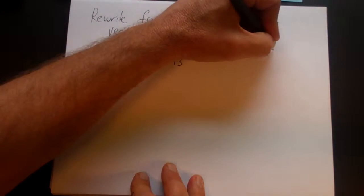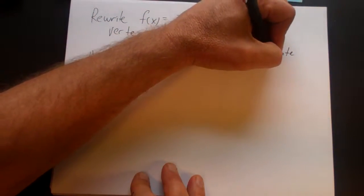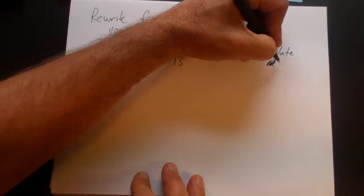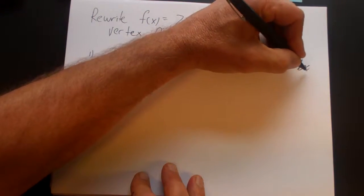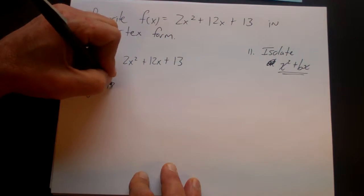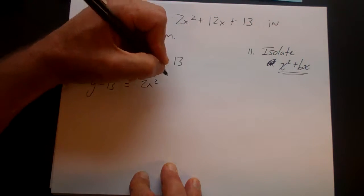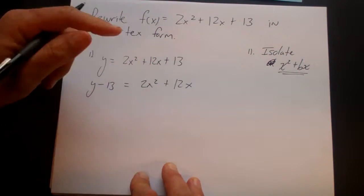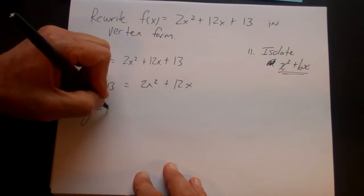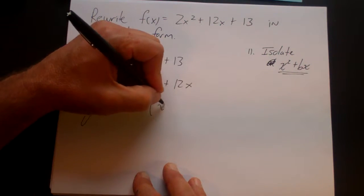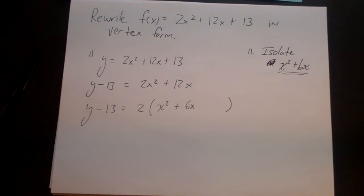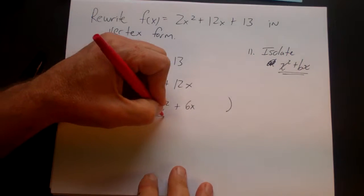So the first thing that you do is you want to write out the equation y equals 2x squared plus 12x plus 13. And the first step is you want to isolate x squared plus bx. And the way we're going to do that is first we're going to move the 13 over the other side, so y minus 13 equals 2x squared plus 12x. And then I'm going to factor a 2 out. Now you could divide everything by 2, but then you'd do it with fractions. So I'm going to do something a little bit different. I'm going to factor a 2 out and leave it out there so I get x squared plus 6x. And if you've noticed, what I have here is I've isolated x squared plus bx.